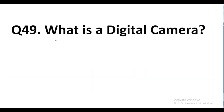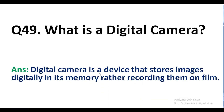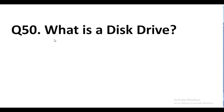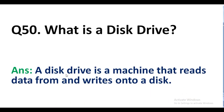Question number 49. What is a digital camera? Answer. A digital camera is a device that stores images digitally in its memory rather than recording them on film. Question number 50. What is a disk drive? Answer. A disk drive is a machine that reads data from and writes data onto a disk.